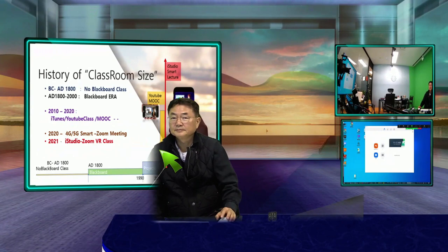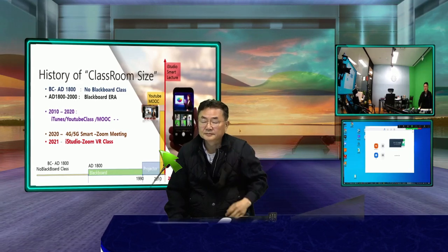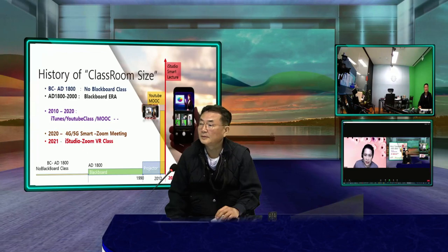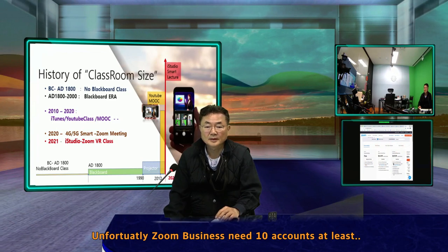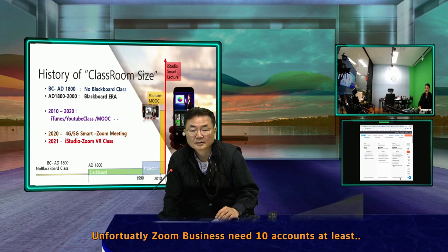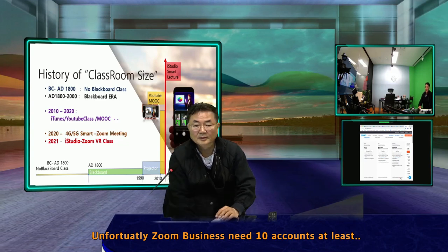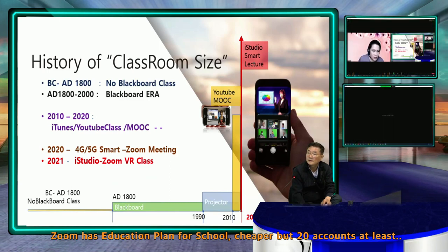It's going to be a minimum of 10 licenses at $19.99 per license, so that's $199.90 per month. This is the Zoom Business account — minimum of 10 licenses at $199.90 per month.